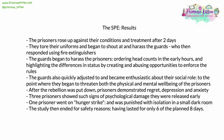The guards responded to try and put down this insurrection using weapons, including fire extinguishers. Following this attempted but unsuccessful rebellion, the guards began to harass the prisoners — ordering head counts in the early hours of the night and abusing petty opportunities to enforce the rules. The guards quickly adjusted to and became very enthusiastic about their social role, to the point where they actually began to threaten both the physical and mental well-being of the prisoners. After the rebellion was put down, prisoners demonstrated regret, depression, and anxiety — serious symptoms of a mental health problem.